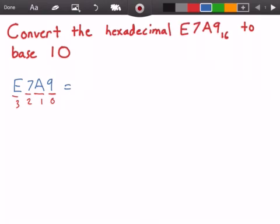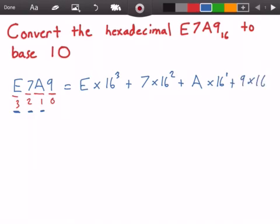So we get E times 16 to the power of 3, because our index was 3, plus 7 times 16 to the power of 2, because our index was 2, plus A times 16 to the power of 1, plus 9 times 16 to the power of 0.